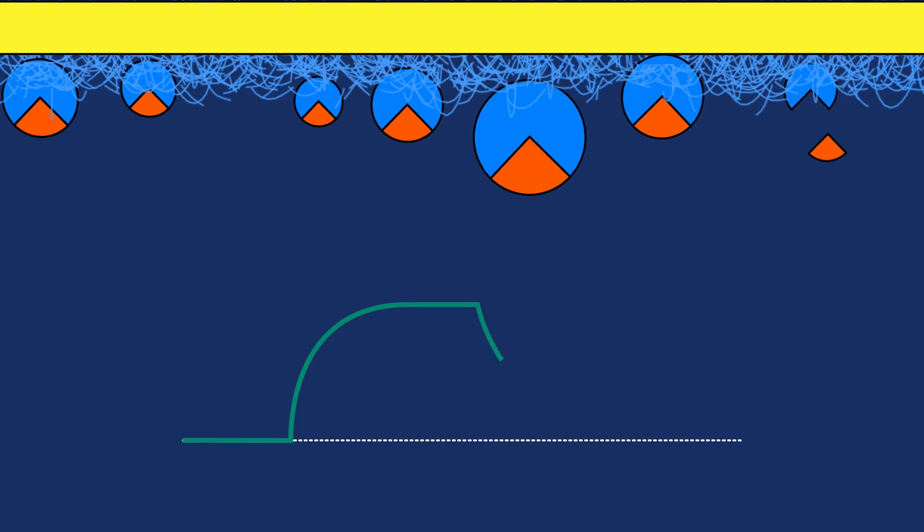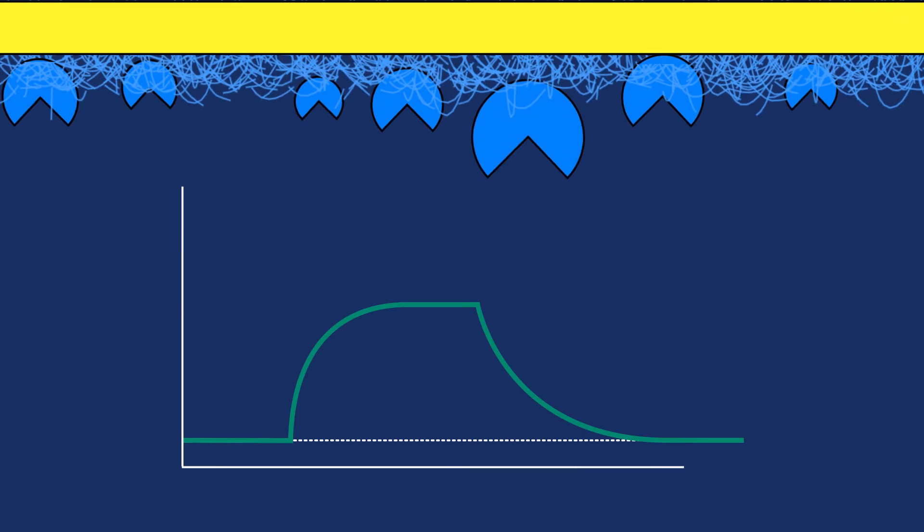The detection of changes in refractive index allows you to monitor binding events of the interaction as complexes form and associate, and fall apart and dissociate. The interaction is displayed as a sensorgram with the binding response on the y-axis plotted against time on the x-axis.